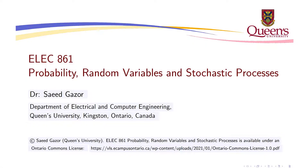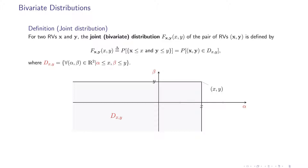We'll first define a bivariate random vector, which is a random vector with two random variables in it. So what is a bivariate distribution? For two random variables x and y, the joint bivariate distribution — sometimes we just say joint distribution since bivariate means two random variables — the distribution f(x,y) of their pair of random variables is defined as follows.